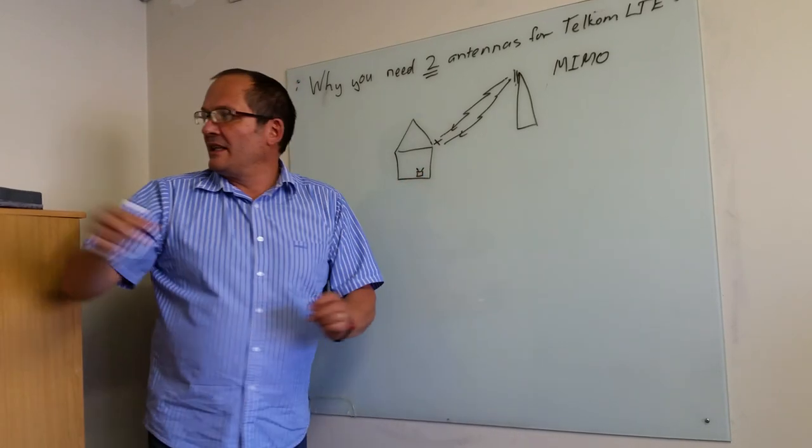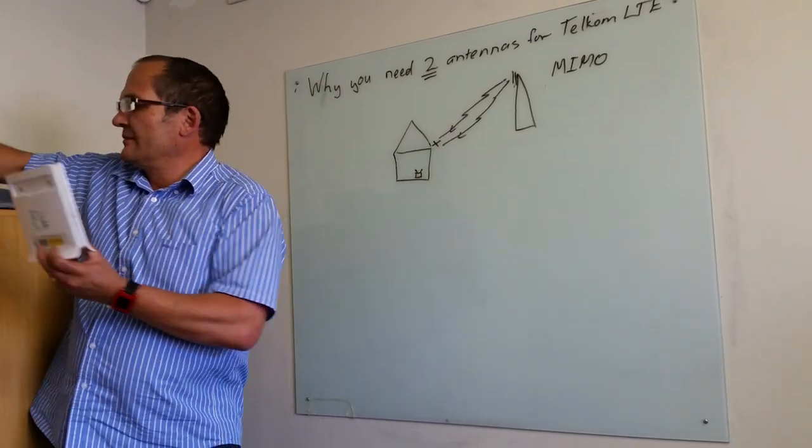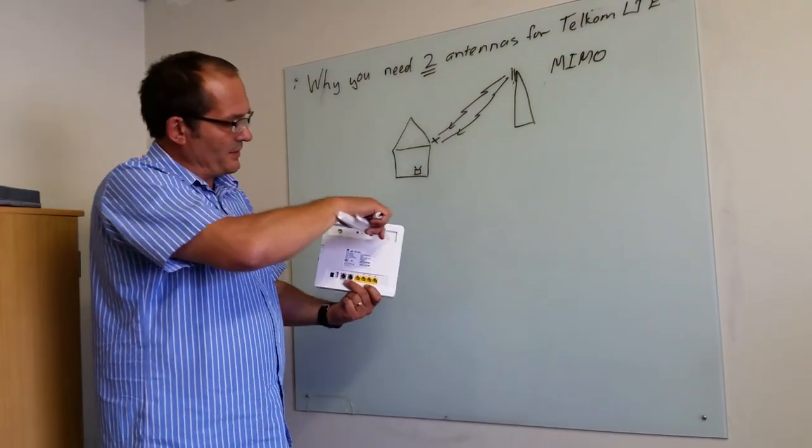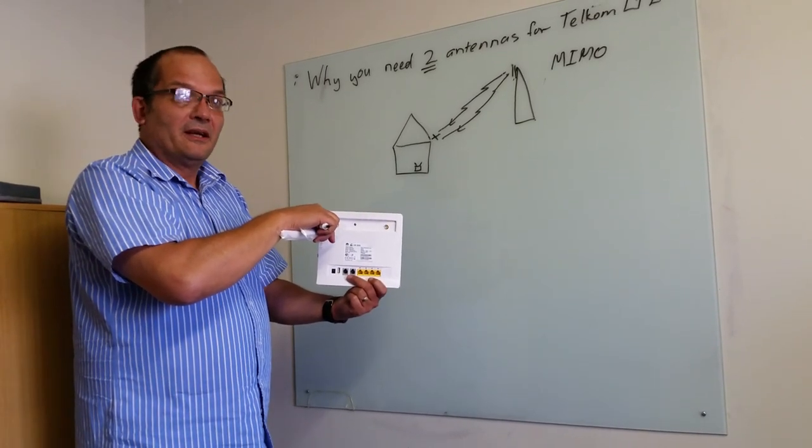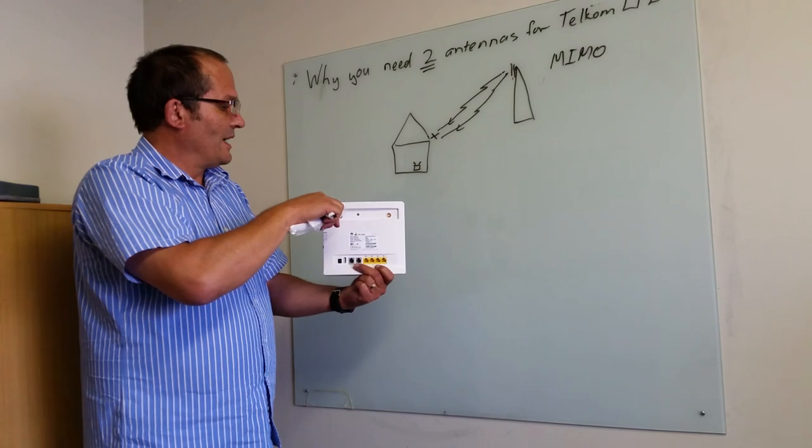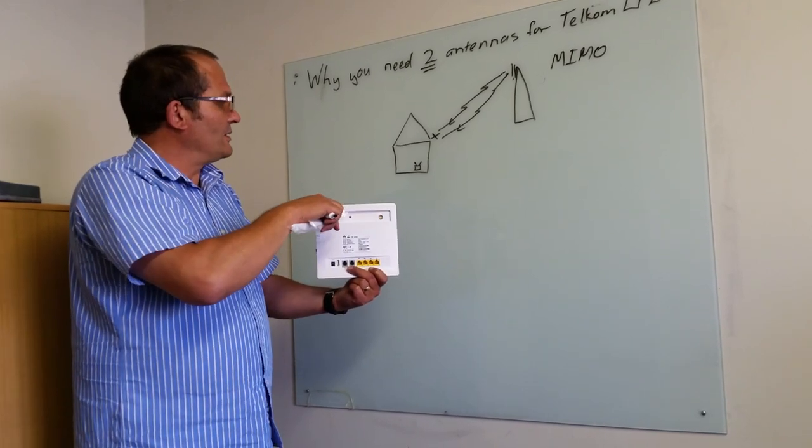Now normally, once again, they supply your indoor unit which has got place for the two antennas. So you can see any LTE modem that's a proper LTE modem must have two antennas otherwise highly unlikely that it can give you two LTE speeds.